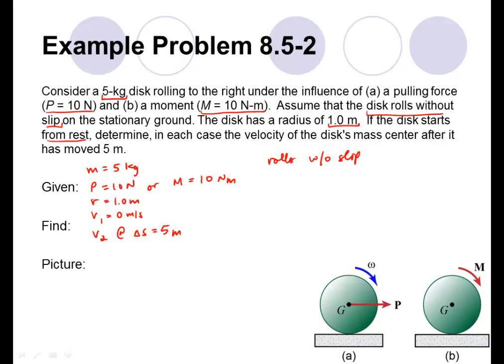In further understanding the problem, we should draw a picture — in particular, a free body diagram to help understand what's happening. In the first case, we have the supplied force P. The disc has some weight, there'll be a normal force of the ground reacting to the disc, and there will be a friction force. We can imagine that the disc is going to roll such that it has some angular acceleration and angular velocity in the clockwise direction.